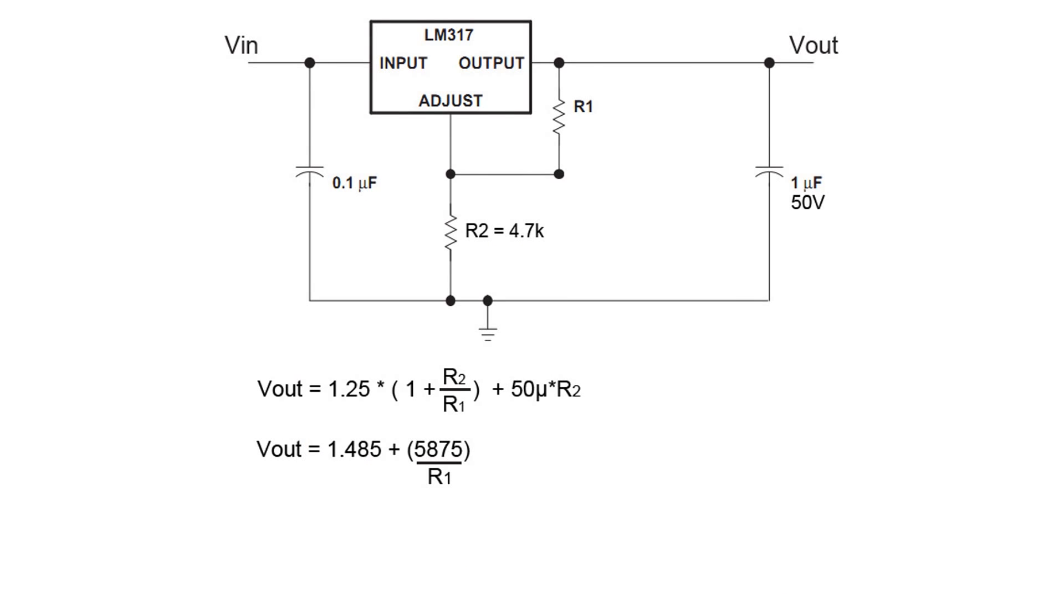In order to simplify the equation let's pick a value for R2. Let's make it 4.7 kilo ohms and now the equation becomes much easier. Next you can rearrange the equation like this. Now you can find out the value of R1 based on the output voltage that you want.